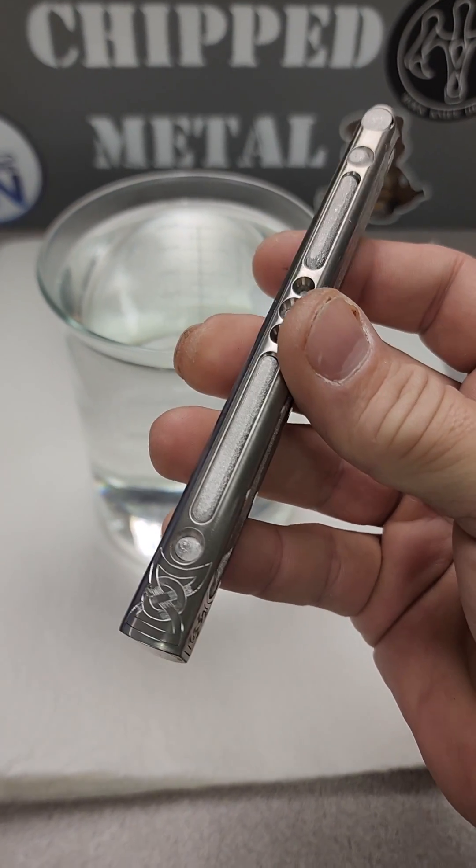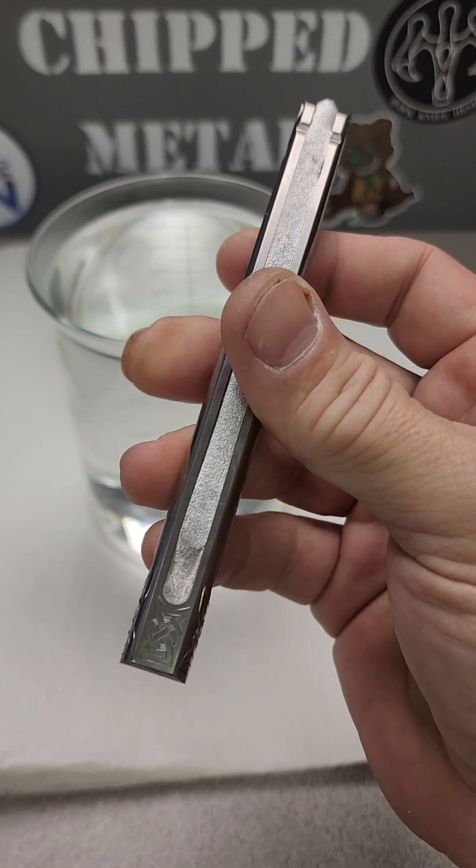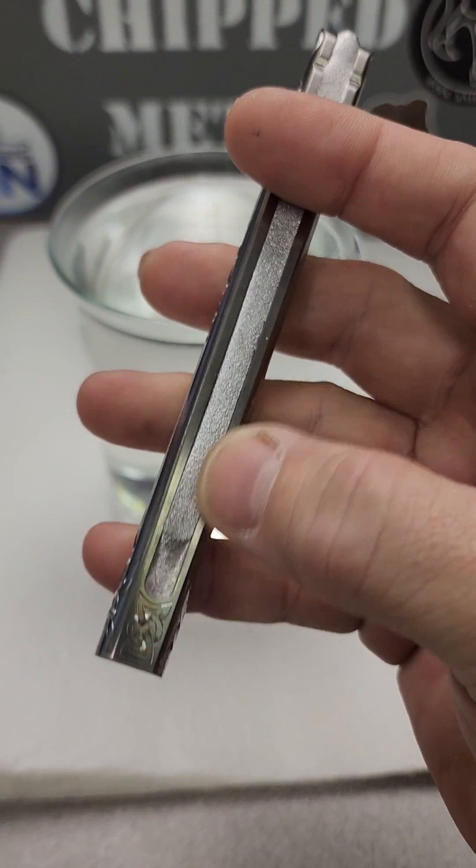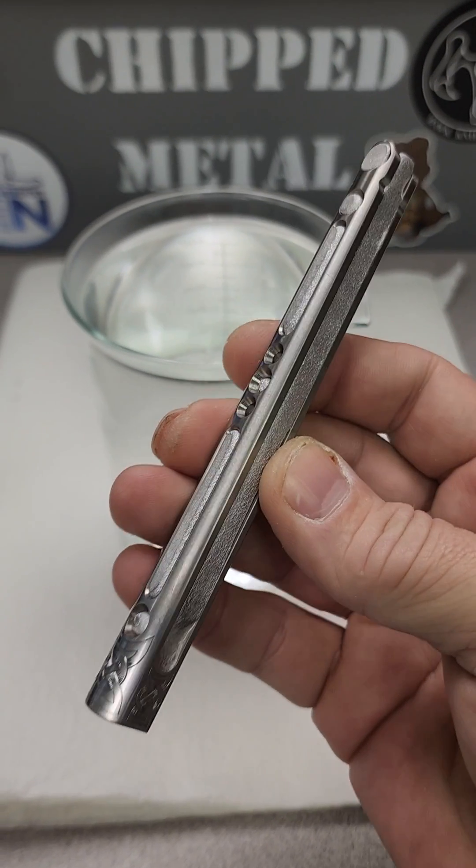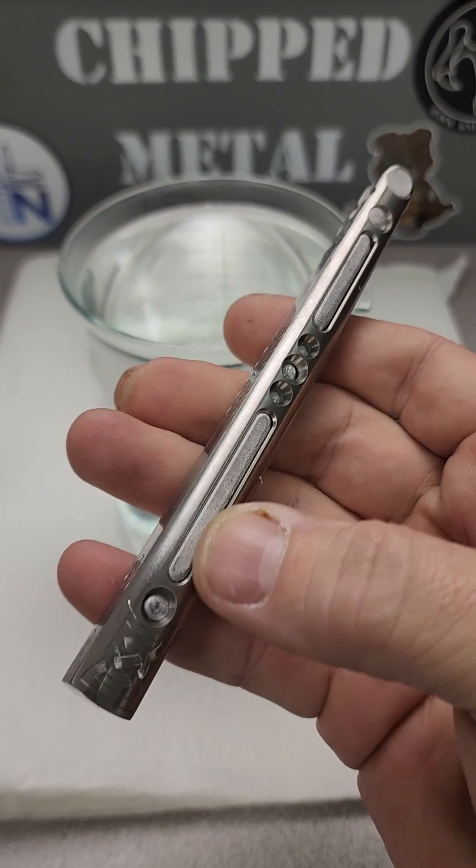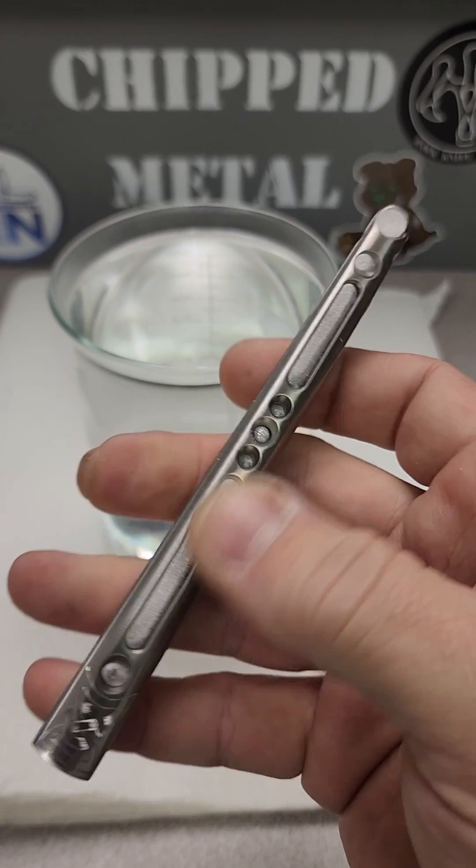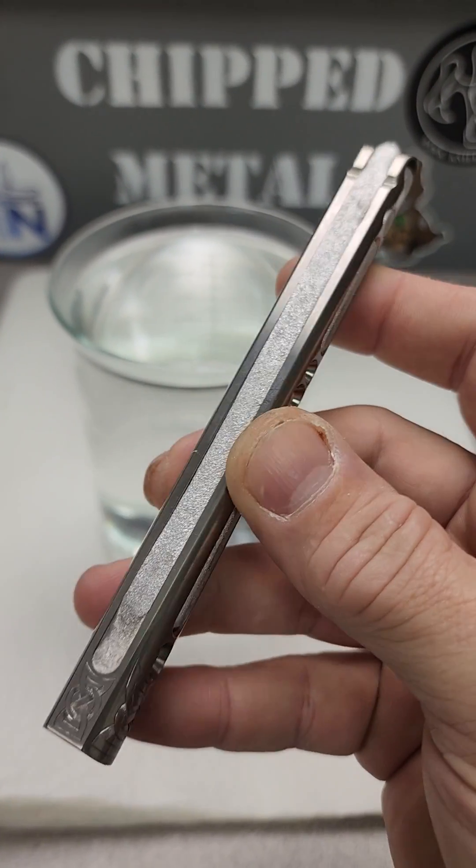All right, so this handle is done and some of you may have noticed that I'm using something new for reinforcing and cutting down on vibration when I engrave hollow pieces. Being able to fill a handle like this with a rigid material is really helpful.